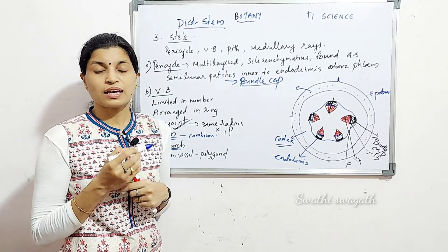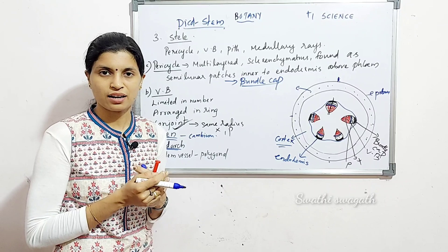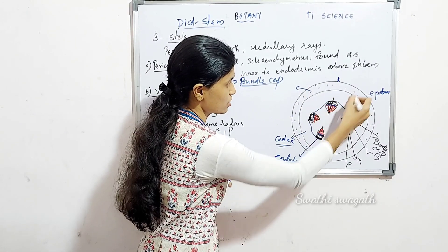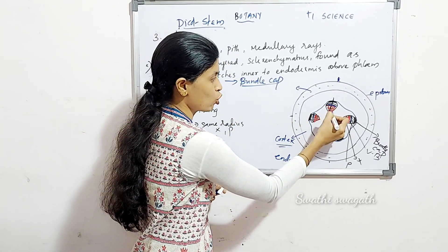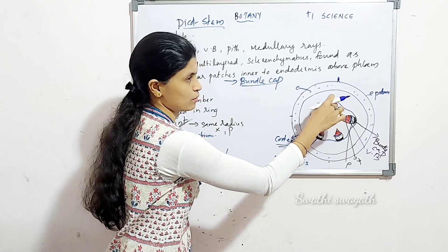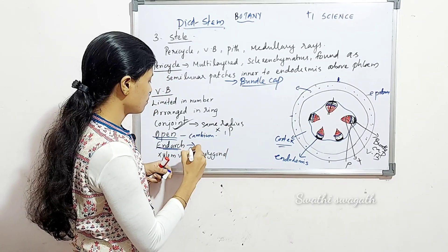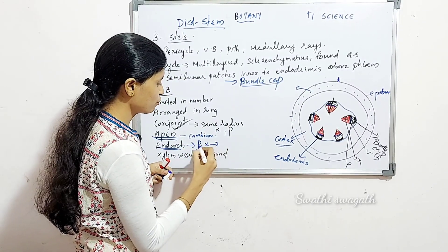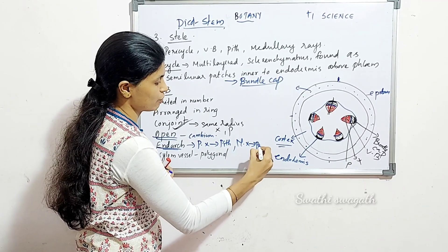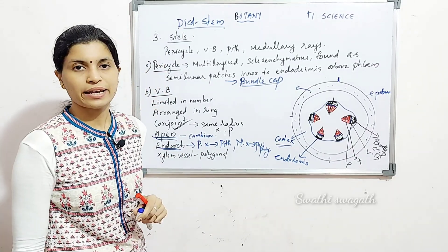The xylem is endarch. In the case of root it is exarch xylem, but here it is endarch — the opposite. Protoxylem, which is the smaller xylem, faces towards the pith, and metaxylem, which is the larger xylem, faces towards the periphery. That condition is called endarch.